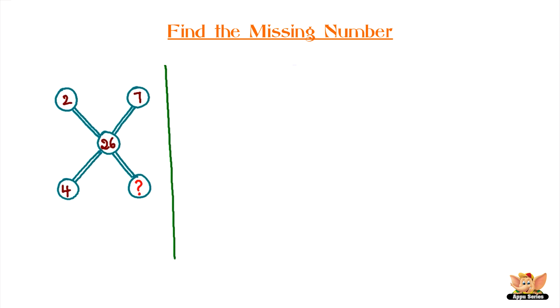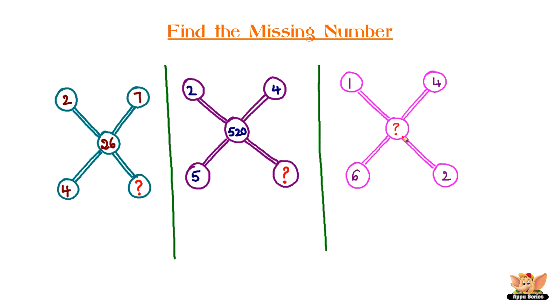We have three sets of circle figures. Each set has a number in them, but one circle in each set is missing a number.